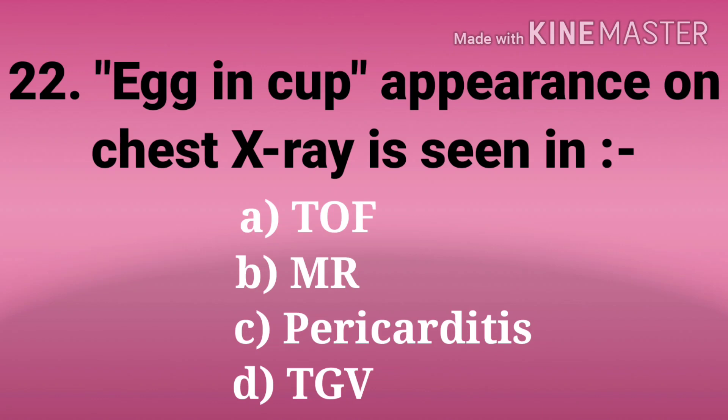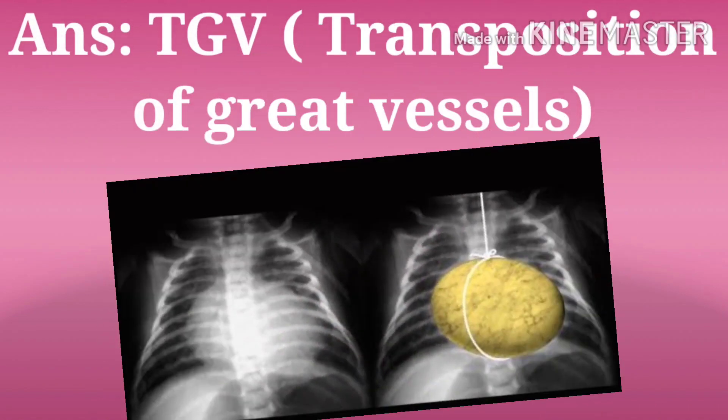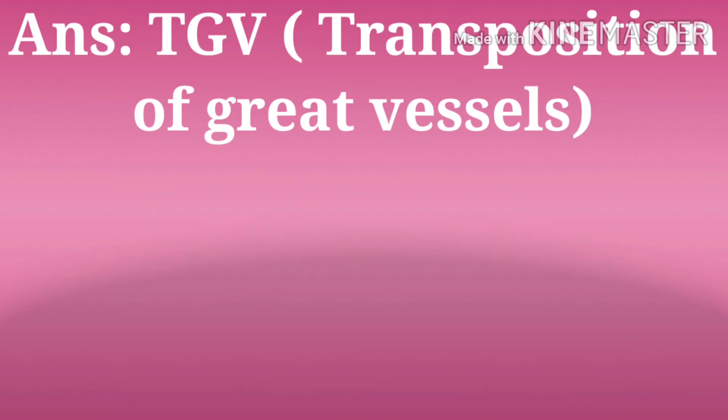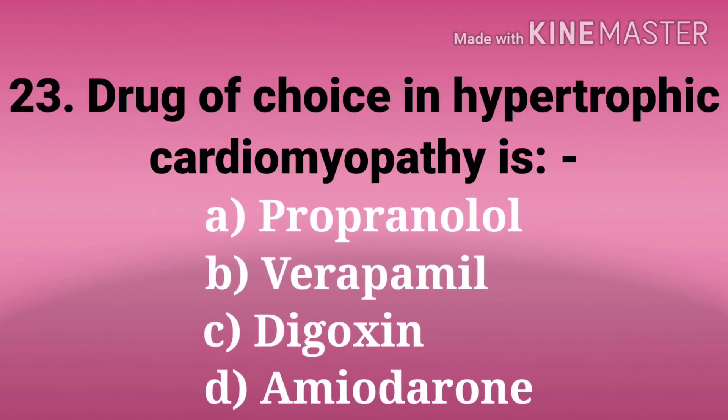The next question: egg-in-cup appearance on chest X-ray is seen in. The options are TOF, MR, pericarditis, and TGV. And the answer is TGV, that is transposition of great vessels. It is otherwise called egg-in-a-string appearance.